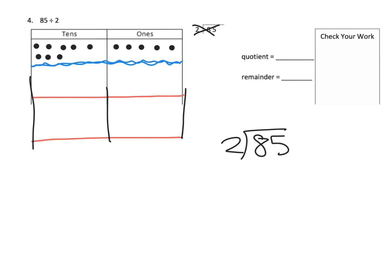We're going to begin by taking our tens and sorting them amongst our two groups. We have 8 of them: 1, 2, 3, 4, 5, 6, 7, 8 — so each group gets 4. We record that: each group gets 4 tens. Taking the 8 tens and separating them amongst two groups means each group gets 4 tens. We've used up all 8 tens and have nothing left over.